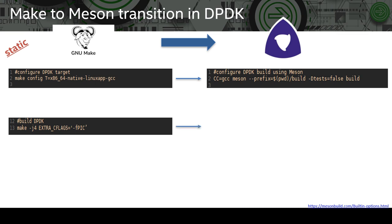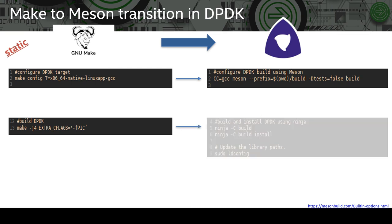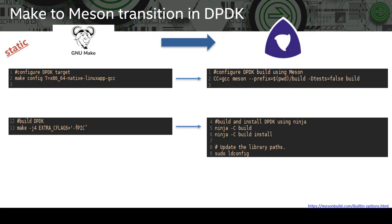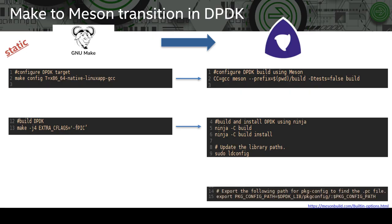Next we build and install using Ninja and run ldconfig to update the ld cache. Now there is an extra step we must perform in case of Meson, which is to export the pkg-config path. This needs to be done so that the pkg-config tool can know which project we are talking about and what libraries and C flags can be used.